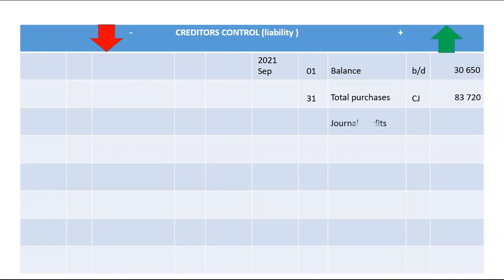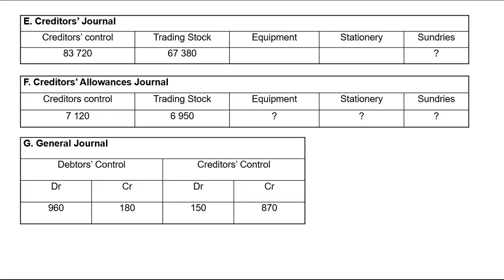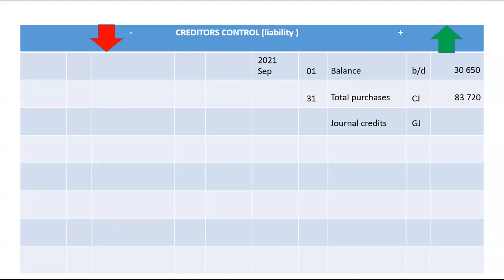The only other thing that will increase creditors control is general credits. You will find this as the total under the creditors control column — the total of the credits in the creditors control. That amount is 870, and it will increase this account on the credit side.